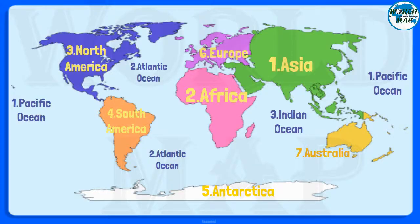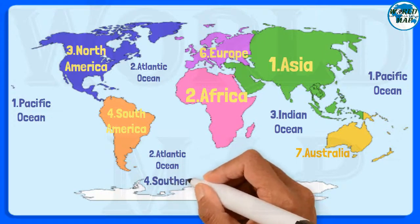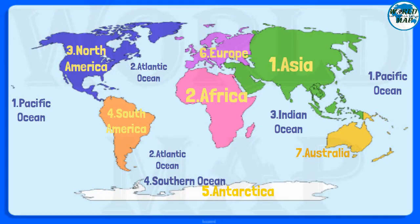Number 4: Southern Ocean. In 2000, the Southern Ocean became the newest ocean recognized by the International Hydrographic Organization. It borders Antarctica in its entirety.